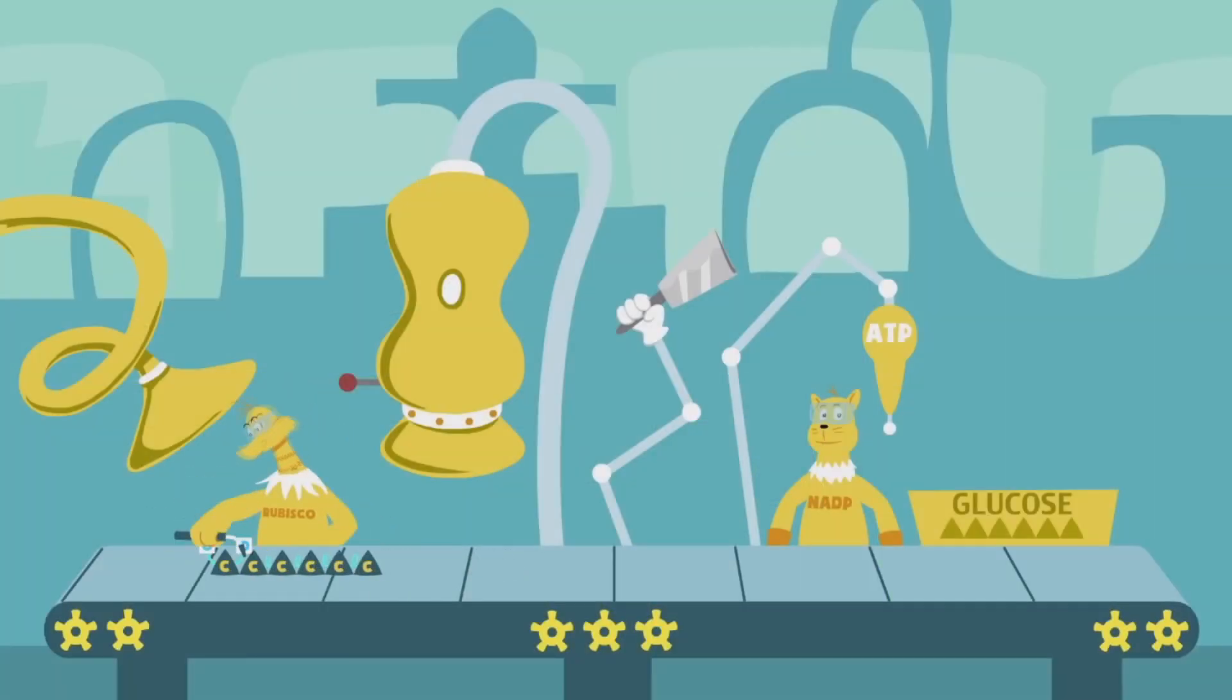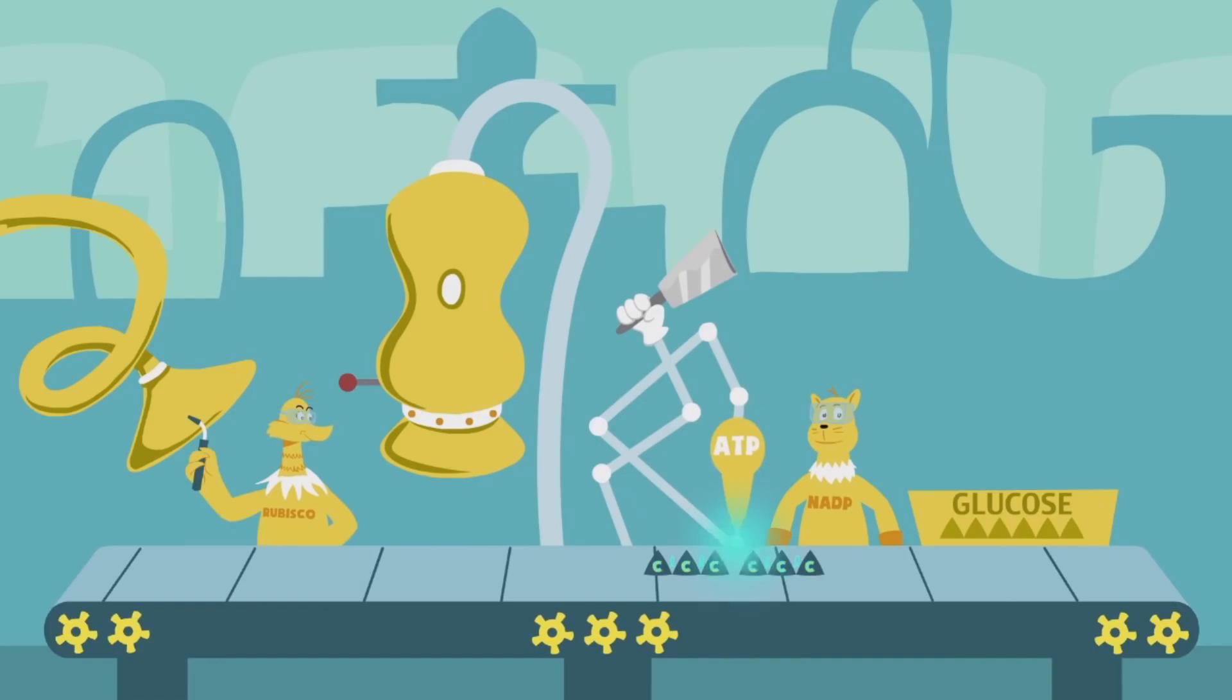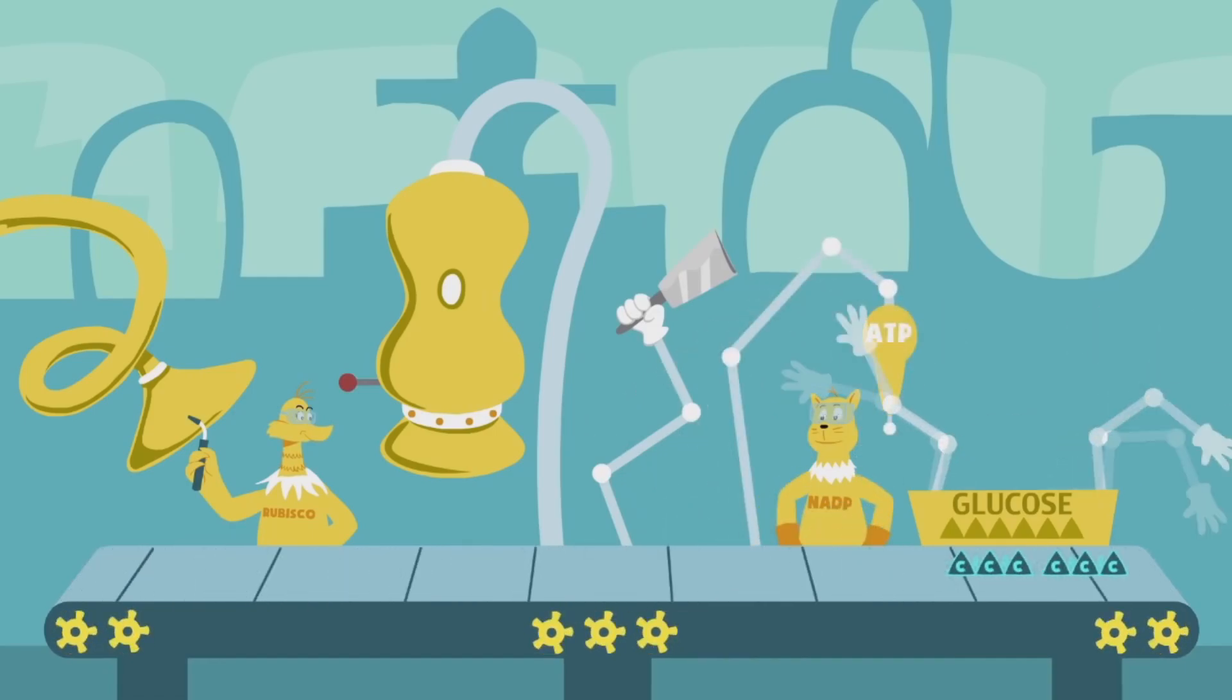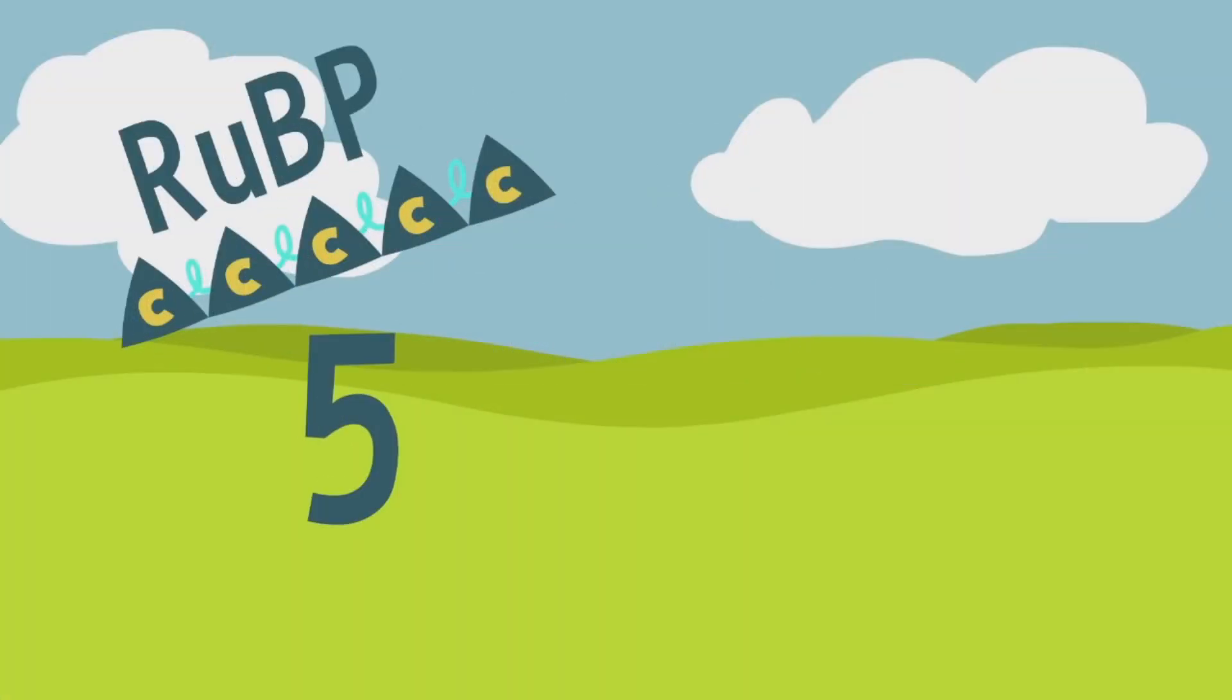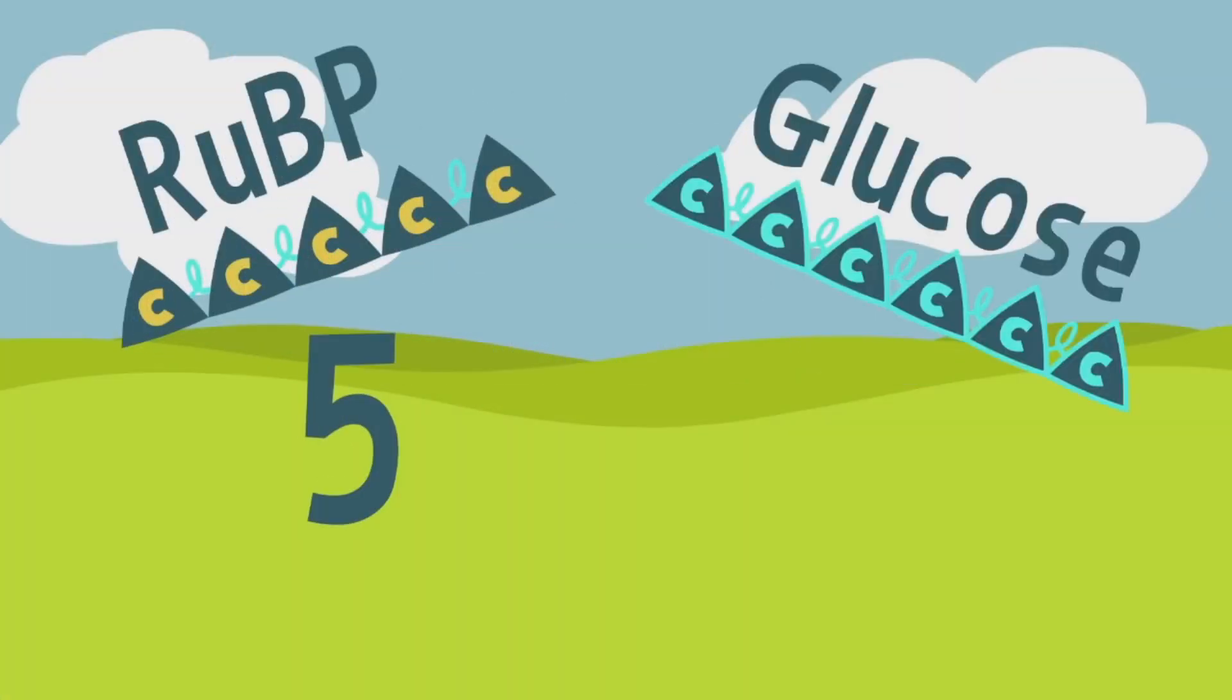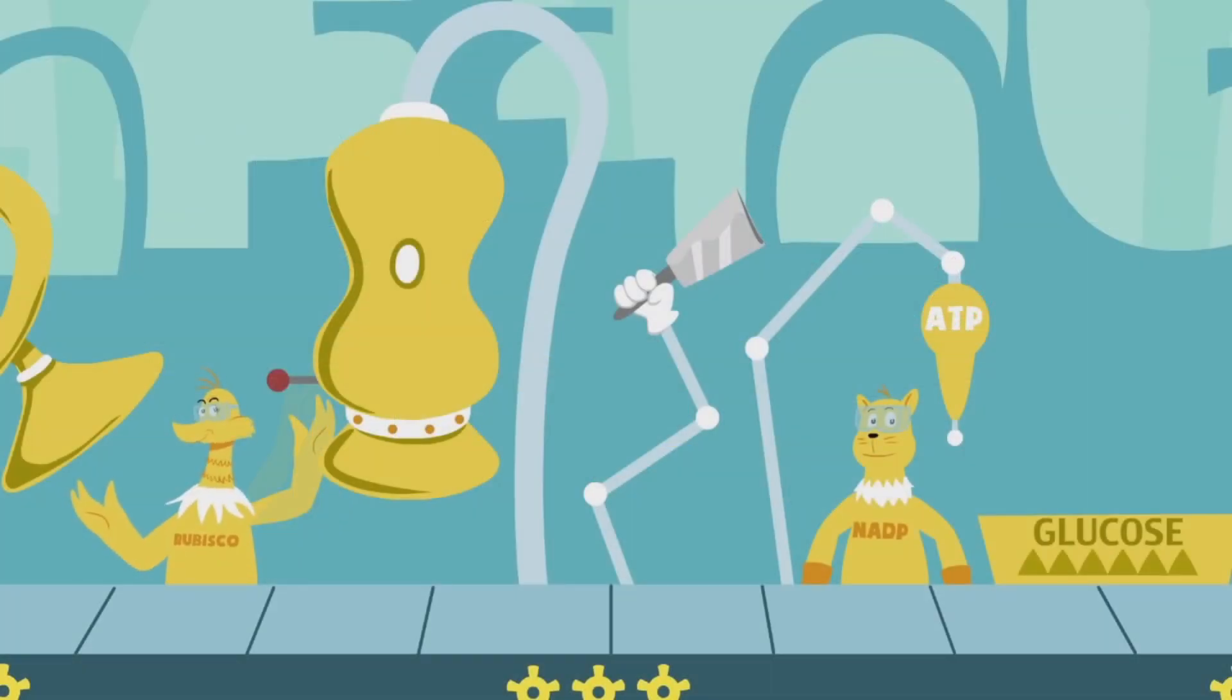The Calvin cycle works like a sustainable production line, meaning those original RuBPs that kicked things off need to be recreated by reusing materials within the cycle. But each RuBP needs five carbons, and manufacturing glucose takes a whole six. Something doesn't add up. The answer lies in one phenomenal fact: while we've been focusing on this single production line...